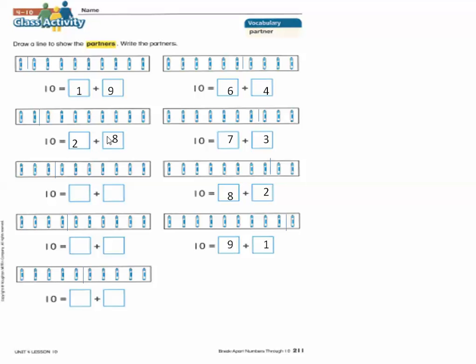Two plus eight equals ten. Two and eight are partners of ten. Let's go to the next one.